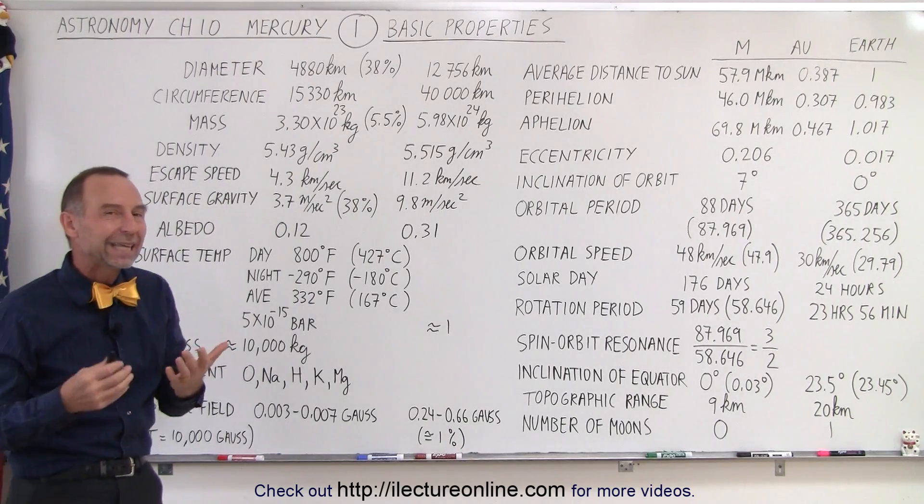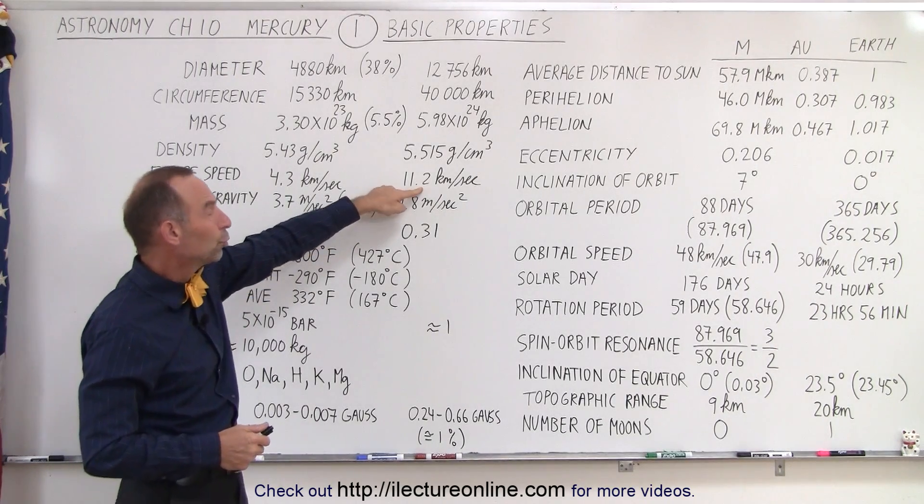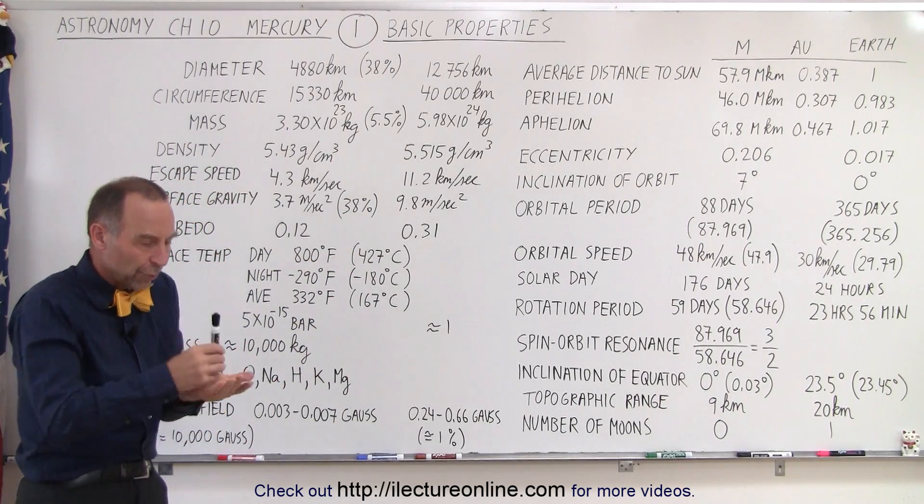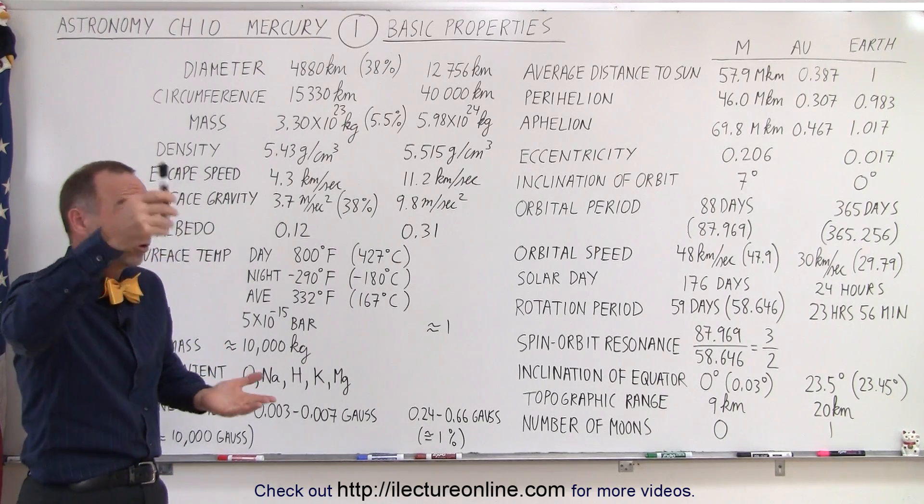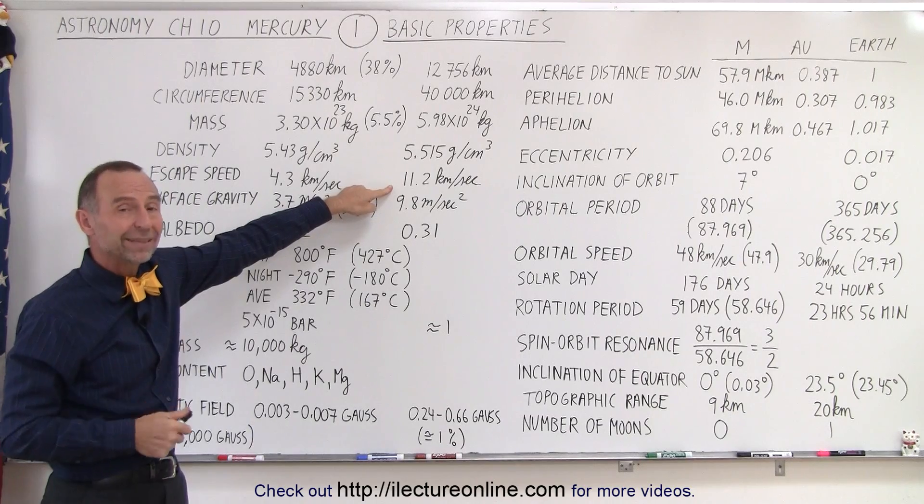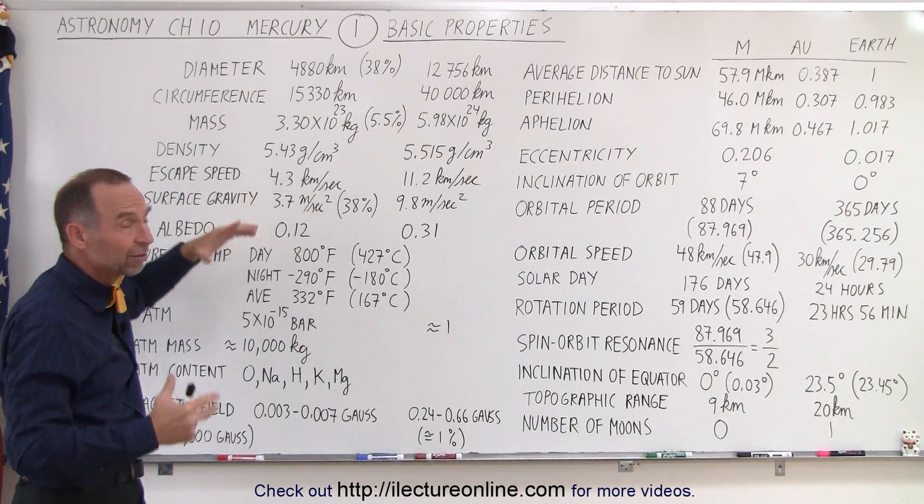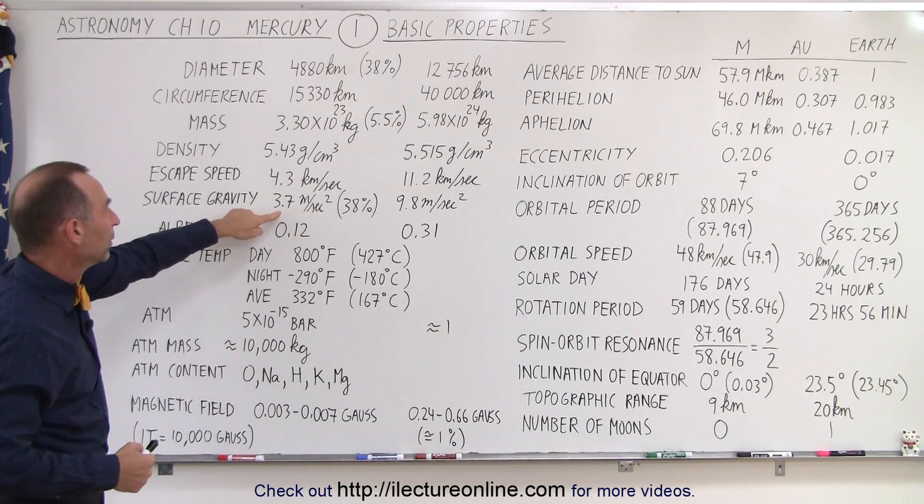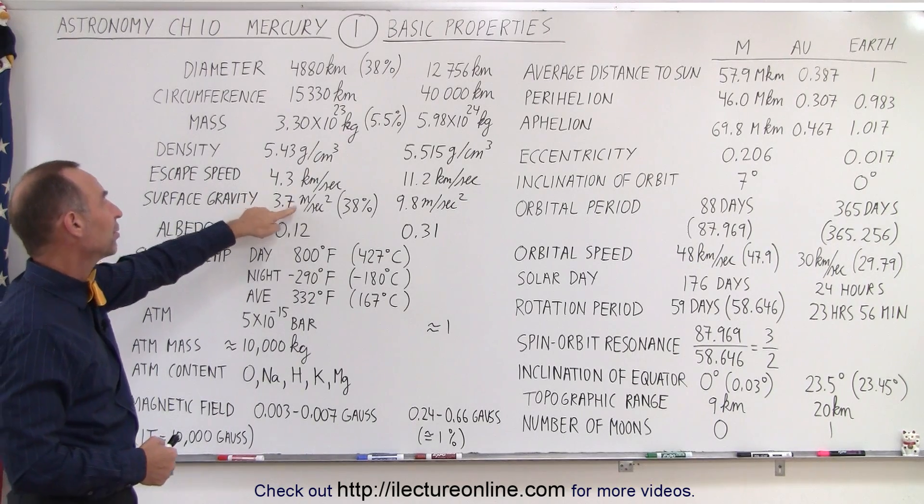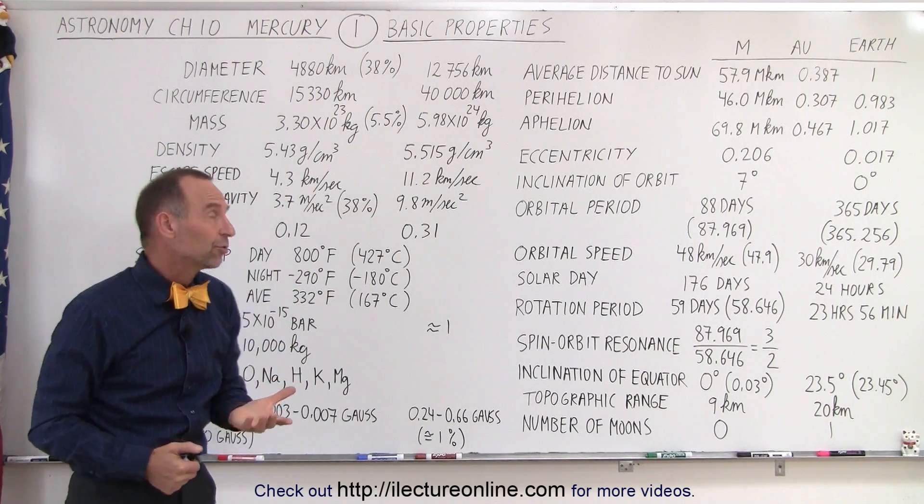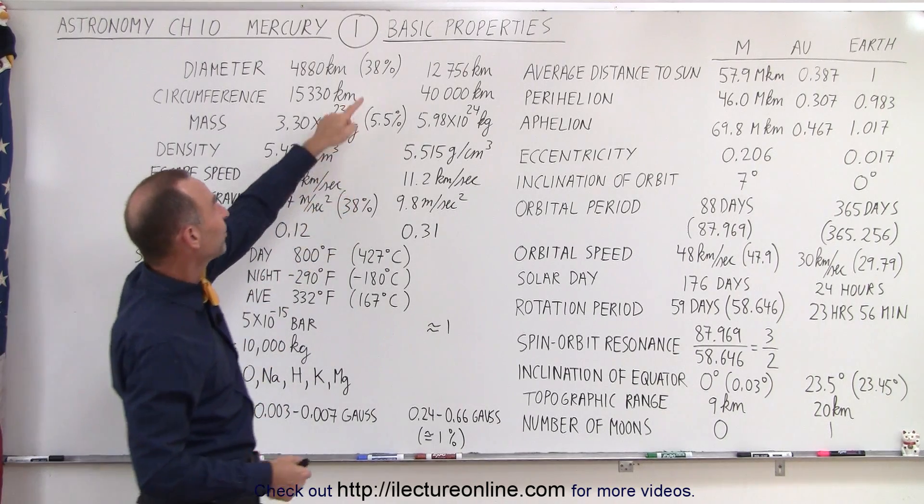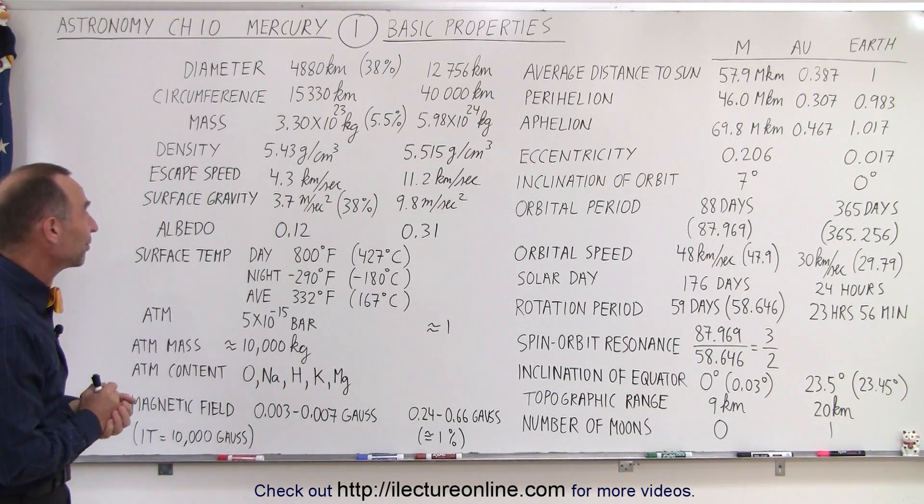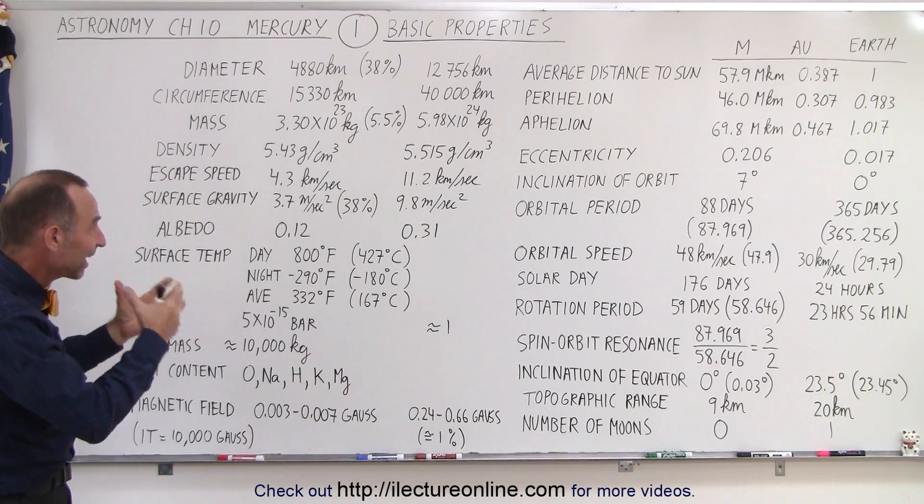Escape speed is the speed you need to get away from the planet. For the Earth it's 11.2 kilometers per second, about seven miles per second, or about 25,000 miles per hour. For a rocket to be able to get away from the Earth, let's say to go to the Moon or another planet, you have to travel at least this speed. For Mercury, it's quite a bit less because it's a much smaller planet. The surface gravity accordingly is also much smaller. The acceleration due to gravity is 3.7 meters per second squared versus 9.8 meters per second squared, which is about 38%, which is kind of interesting that these two numbers are the same. It just happens to be that way. No particular reason for that, except that the density and the size kind of work out that way.